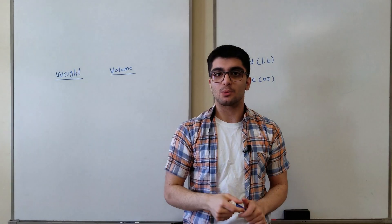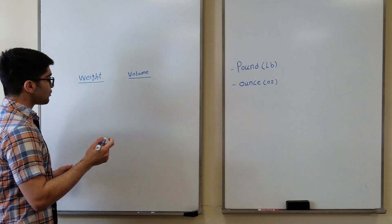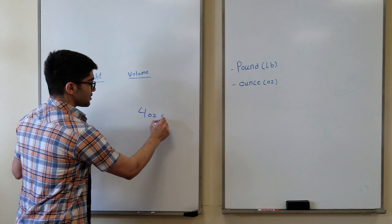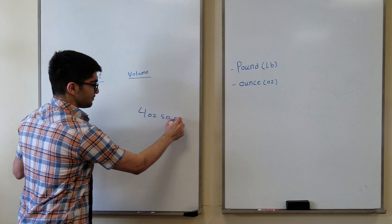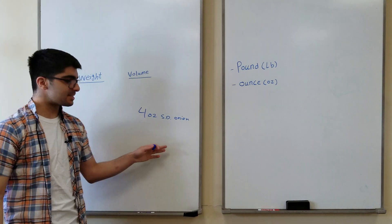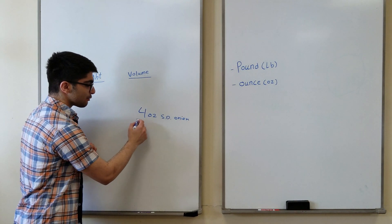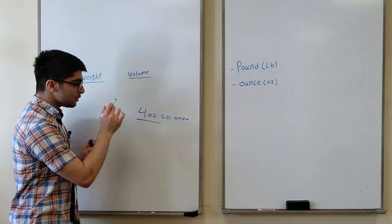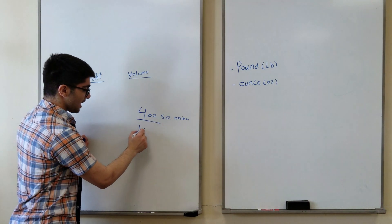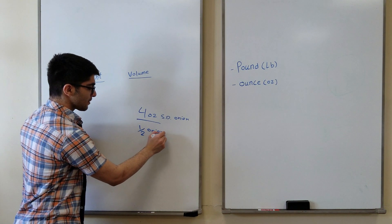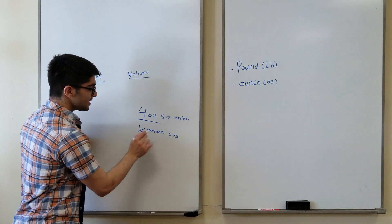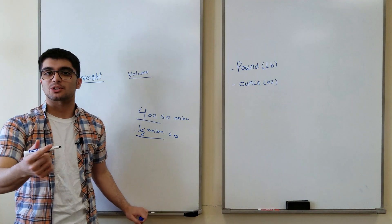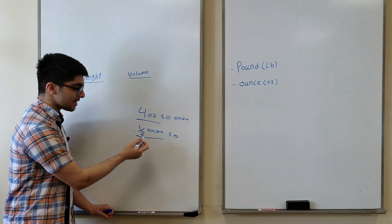What do I mean by that? Well, your recipe may be calling for, let's say, four ounces of small diced onion. This is standardized because it's asking for four ounces of small diced onion — it's a weight, it has been measured. But if your recipe calls for half of an onion small dice, this is not standardized, because the half of onion you have may be smaller or bigger than the half of onion that I have.